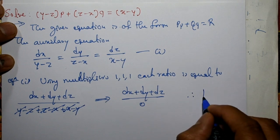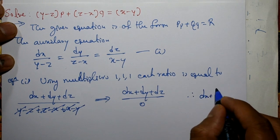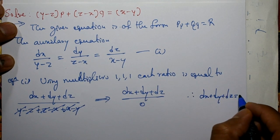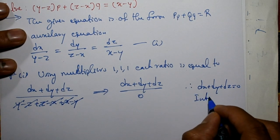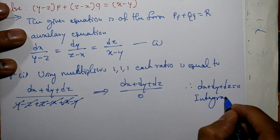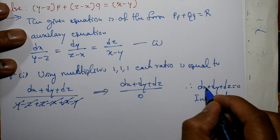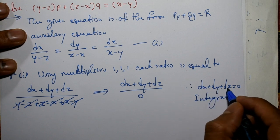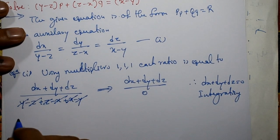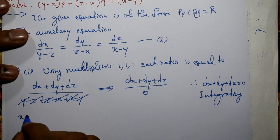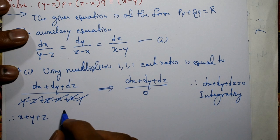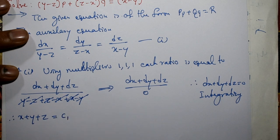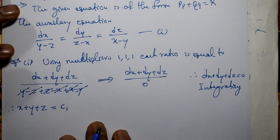Therefore, we get dx plus dy plus dz equal to 0. Integrating with respect to x, y, and z one by one separately, we get x plus y plus z equal to an integral constant c1.